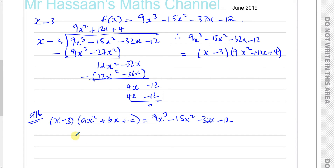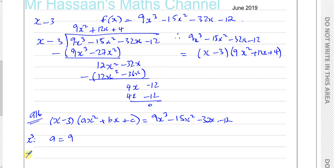The alternative method: if you know x minus 3 is a factor, write (x minus 3)(ax squared plus bx plus c) equal to 9x cubed minus 15x squared minus 32x minus 12. We compare coefficients. The x cubed term is only given by x times ax squared, so a equals 9. For the constant, minus 3c equals minus 12.